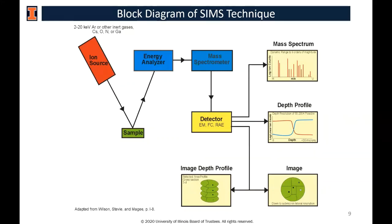This slide shows a generic block diagram of the SIMS instrument. There is an ion source for the primary ion — cesium and oxygen are traditionally used for semiconductor work, while gold and bismuth are used for other analyses. The sample must be vacuum compatible and is best if conducting, though low-energy electron and ion guns allow some insulating samples to be measured. The secondary ions are accelerated through an energy analyzer and mass spectrometer to a detector, yielding mass spectra, depth profiles, ion images, and 3D ion image depth profiles.